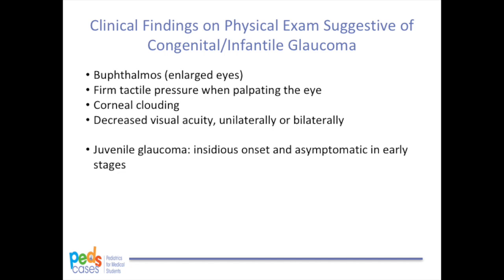Gradually increasing pressure may result in little to no corneal clouding and decreased visual acuity, either unilaterally or bilaterally. Juvenile glaucoma has a more insidious onset similar to glaucoma in adults and is asymptomatic in the early stages, without the classic clinical findings mentioned. Symptoms are rare but may include blurred vision and headaches from elevated IOP. In later stages of the disease, there may be significant vision loss.